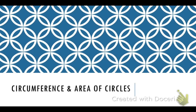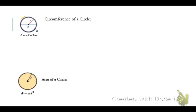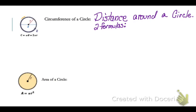This recording is about finding the circumference and area of a circle. The circumference of a circle is the distance around the outside of the circle, and we have two formulas to find that.